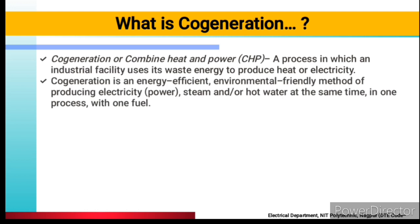Co-generation is an energy efficient, environmentally friendly method which is used to produce electricity — that is power — steam and hot power at the same time in a process with one fuel. With one fuel, we are generating electricity, and that steam which is used to generate electricity is given to the turbine, and after the turbine, electricity is generated.